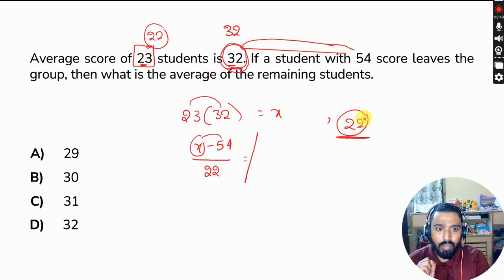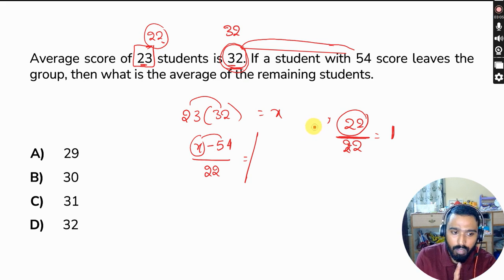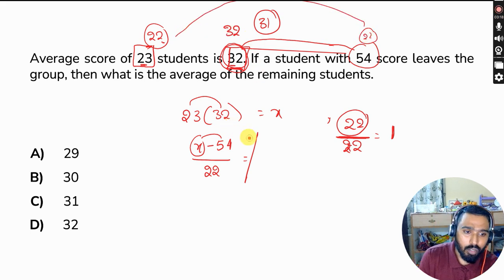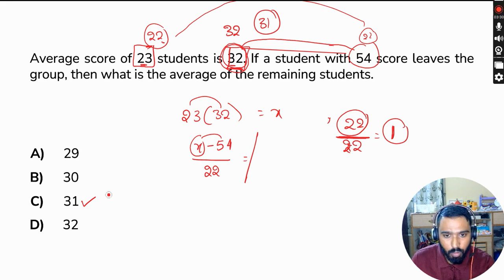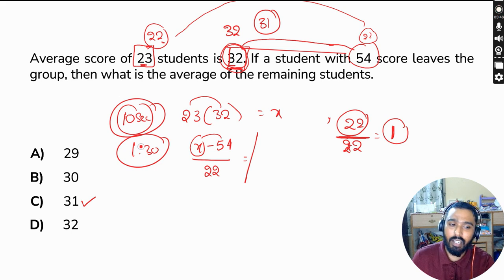This 22 extra load will fall on the remaining students in the group. Out of 23 students, one is going out, so 22 remain. This extra 22 is distributed among 22 students — one extra load per student. So the average is affected by 1 for each student, and instead of 32 the average becomes 31. I hope you understood. You can get this answer within 10 seconds, rather than taking one and a half minutes.